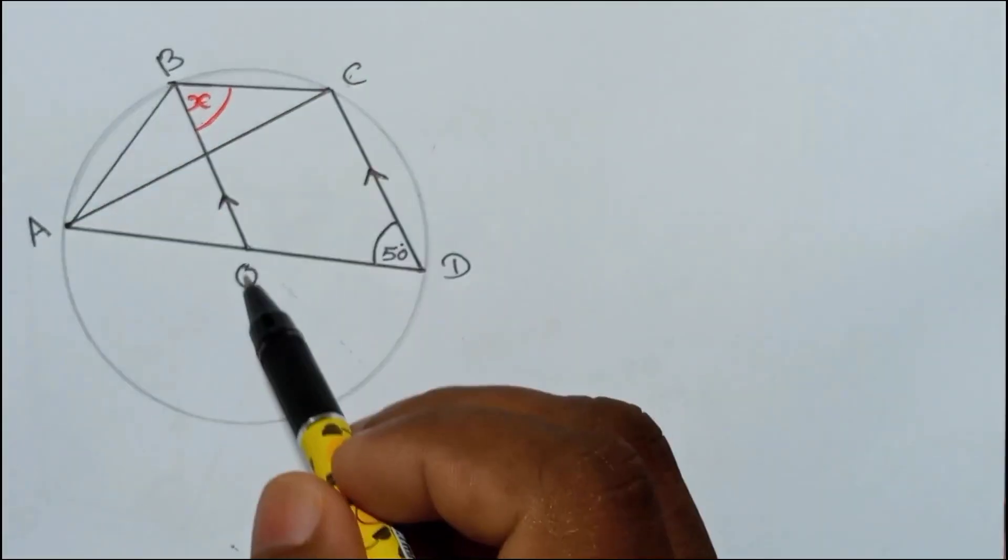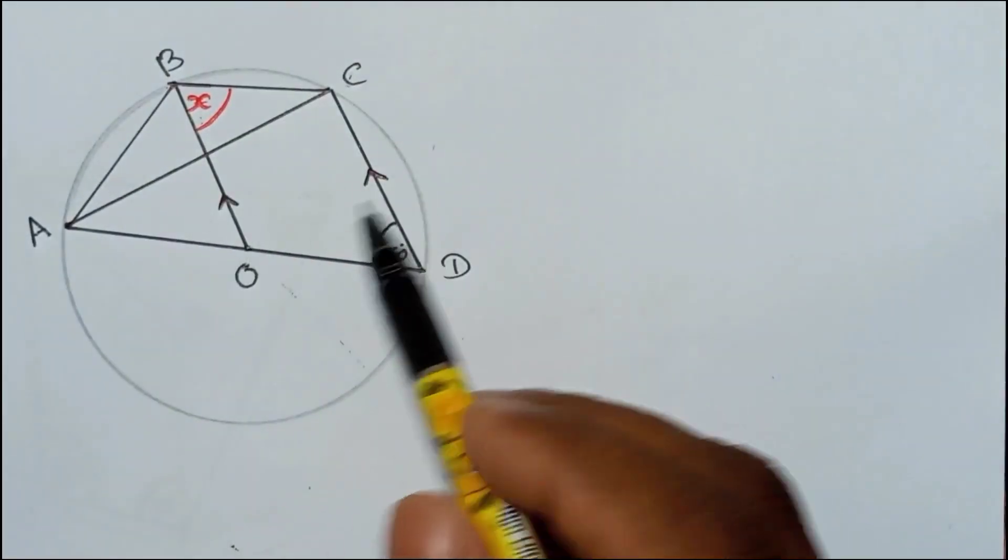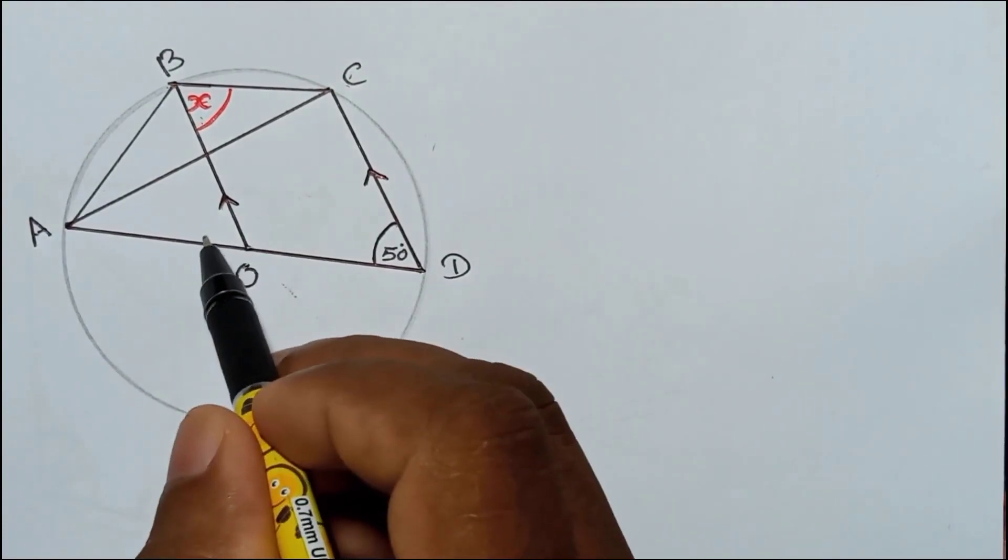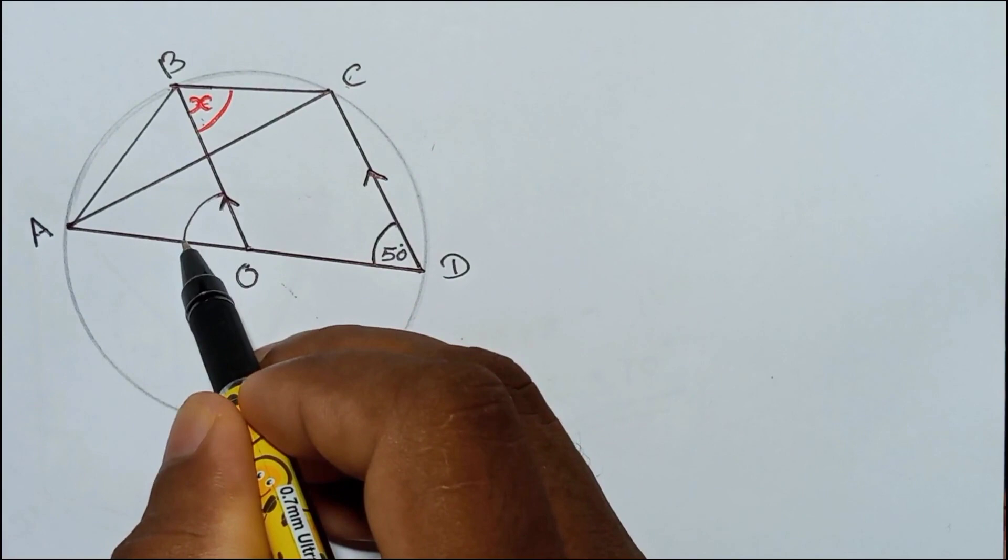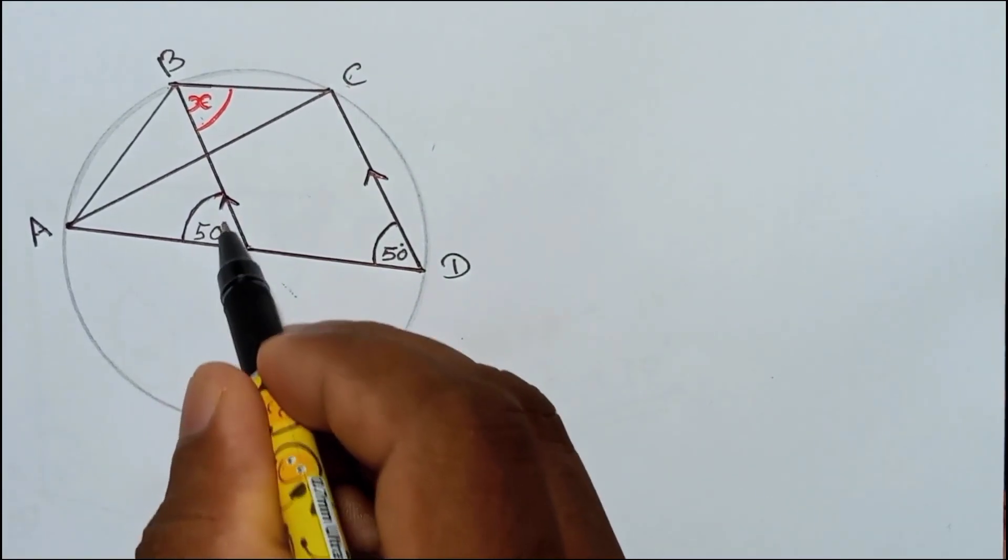Now here, how we can find it? They tell us CD and BO are parallel. So that's why if this is 50, this also must be 50, because of corresponding angles, like F corresponding angles. So you can mark here as 50.